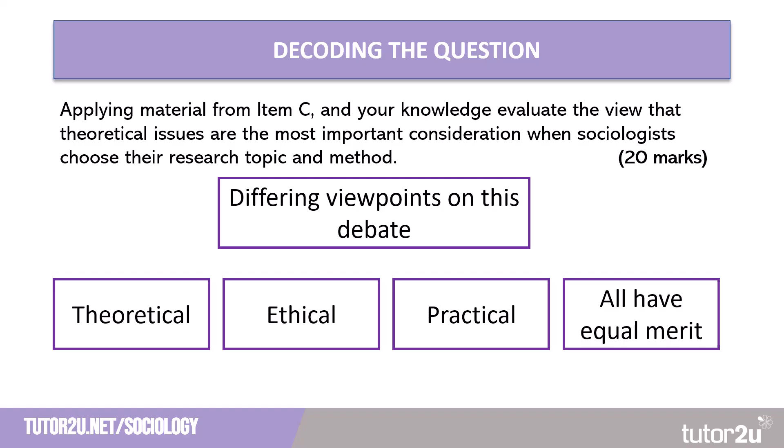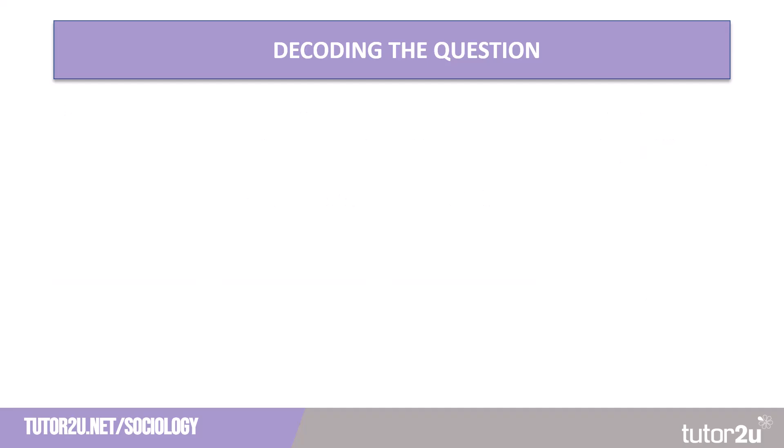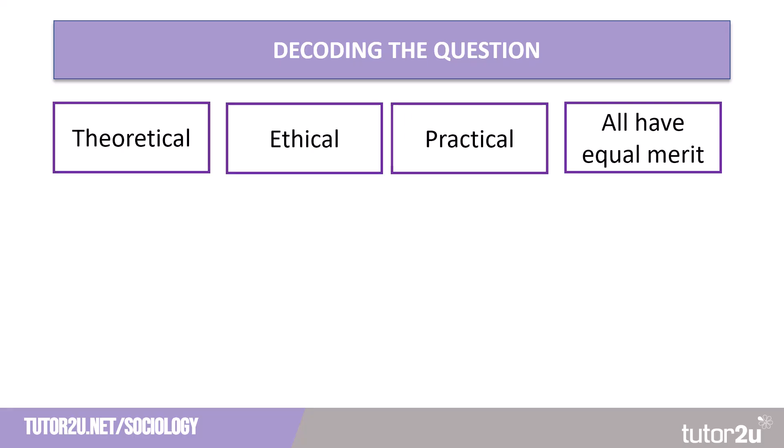I would suggest that all having equal merit is a really good conclusion for this debate. It is very much a sitting-on-the-fence conclusion. However, it shows sophisticated knowledge of sociology to say that actually we cannot view these in isolation. Looking at the four different perspectives — theoretical, ethical, practical, and that they all have equal merit — we'll leave this for our conclusion. But let's focus on our theoretical view first.